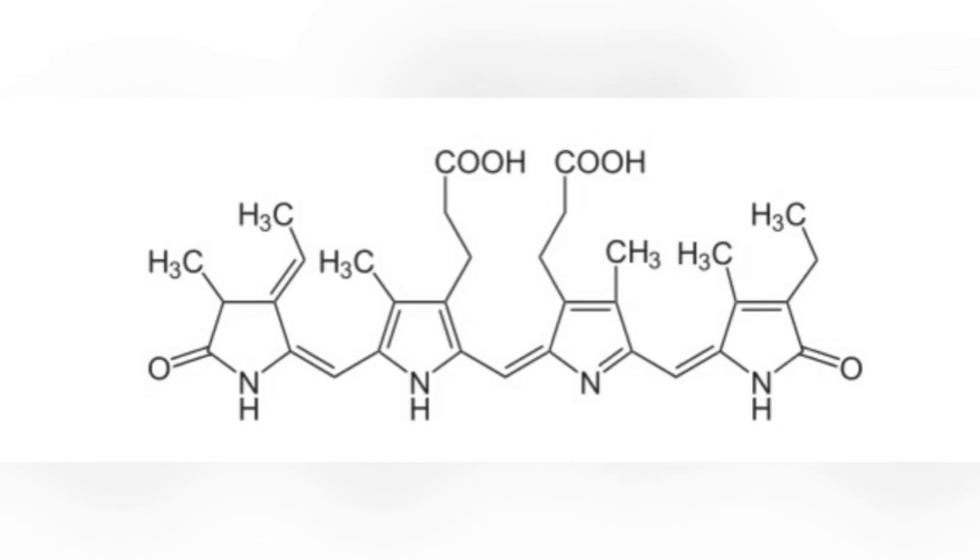C-Phycocyanin is often found in cyanobacteria which thrive around hot springs, as it can be stable up to around 70 degrees Celsius, with identical spectroscopic behaviors at 20 and 70 degrees Celsius. Thermophiles contain slightly different amino acid sequences making it stable under these higher conditions.